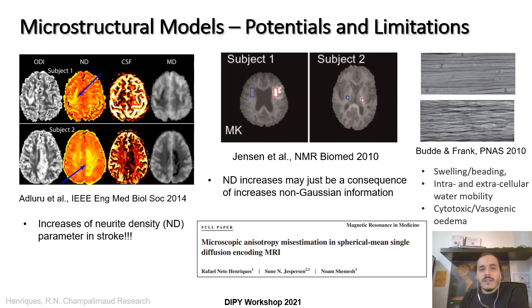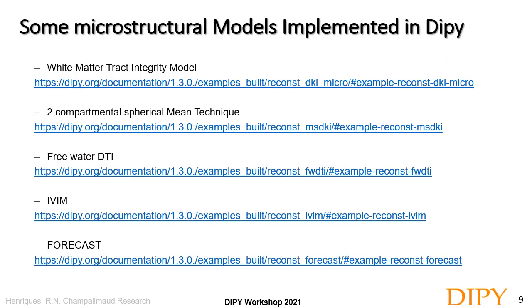The punchline is that while microstructure models can be very useful, they still have to be interpreted with care, and for that, knowledge of the limitations of the models is required. I will stop this talk here and continue in the next part by showing how to use some microstructure models implemented in DIPA.